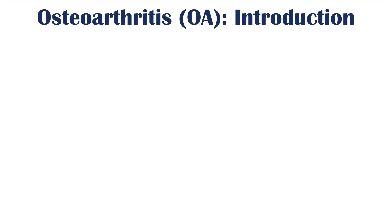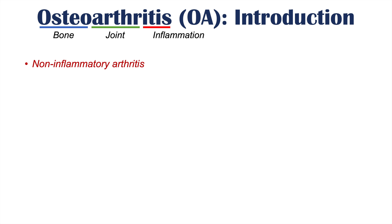If we look at the word osteoarthritis: osteo refers to bone, arth refers to joint, and the suffix -itis refers to inflammation. It essentially means inflammation of a bone joint, but it is actually considered a non-inflammatory arthritis compared to other types of inflammatory arthritis conditions like rheumatoid arthritis.